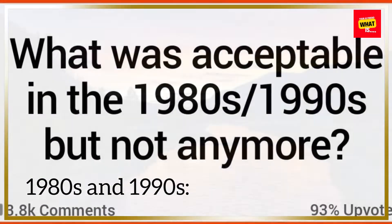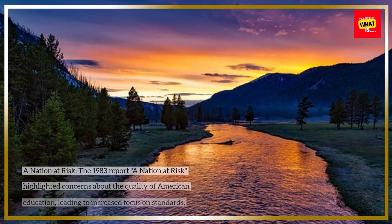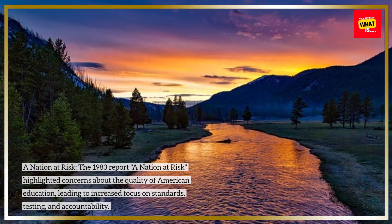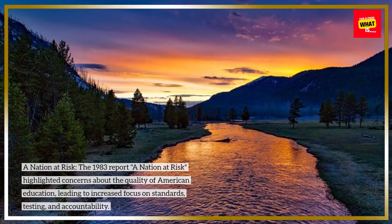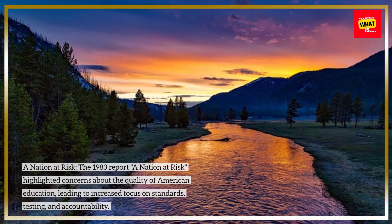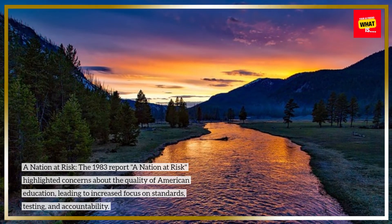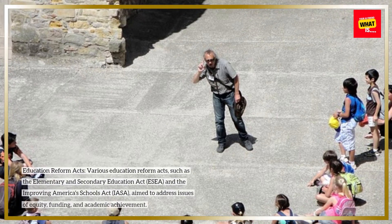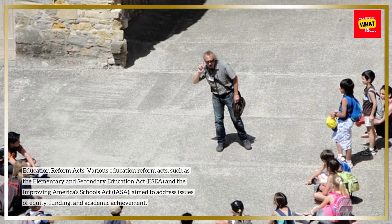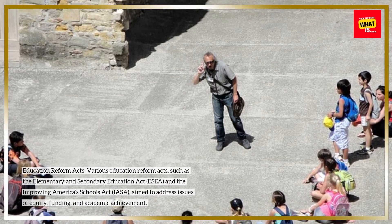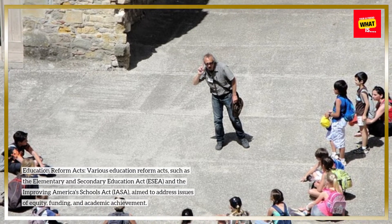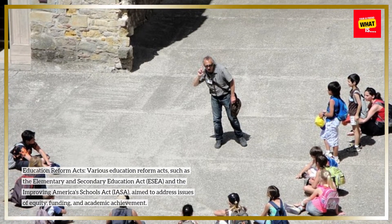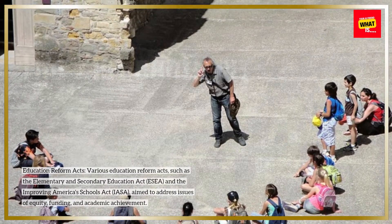1980s and 1990s. The 1983 report A Nation at Risk highlighted concerns about the quality of American education, leading to increased focus on standards, testing, and accountability. Various education reform acts, such as the Elementary and Secondary Education Act (ESEA) and the Improving America's Schools Act (IASA), aimed to address issues of equity, funding, and academic achievement.